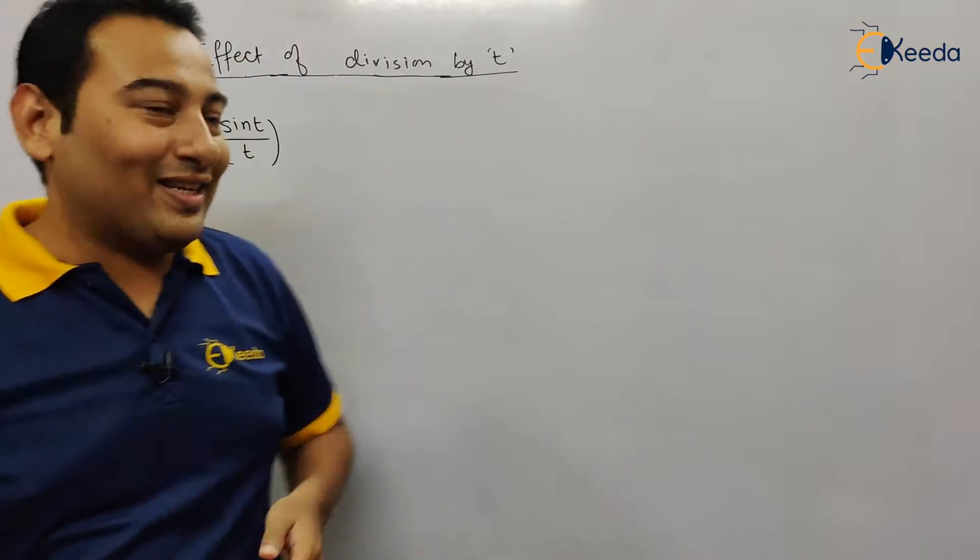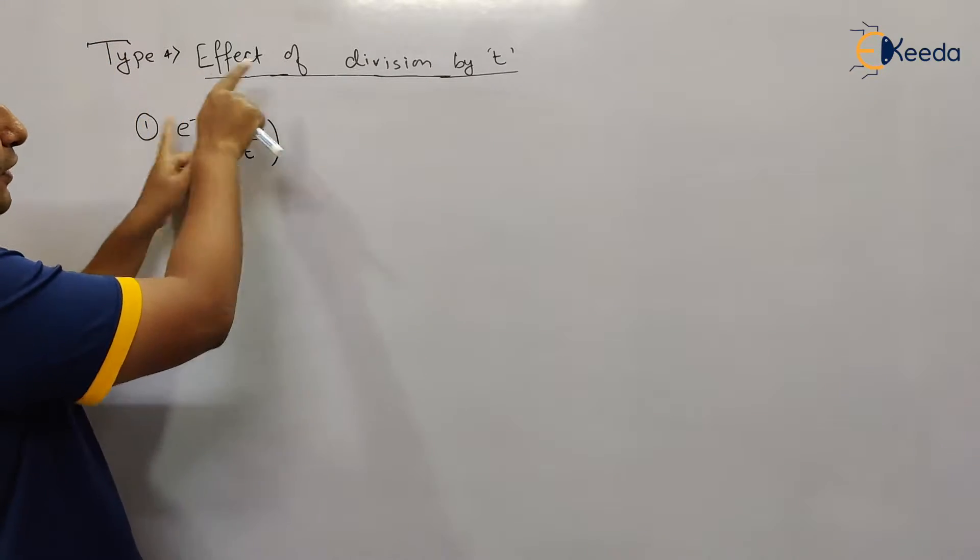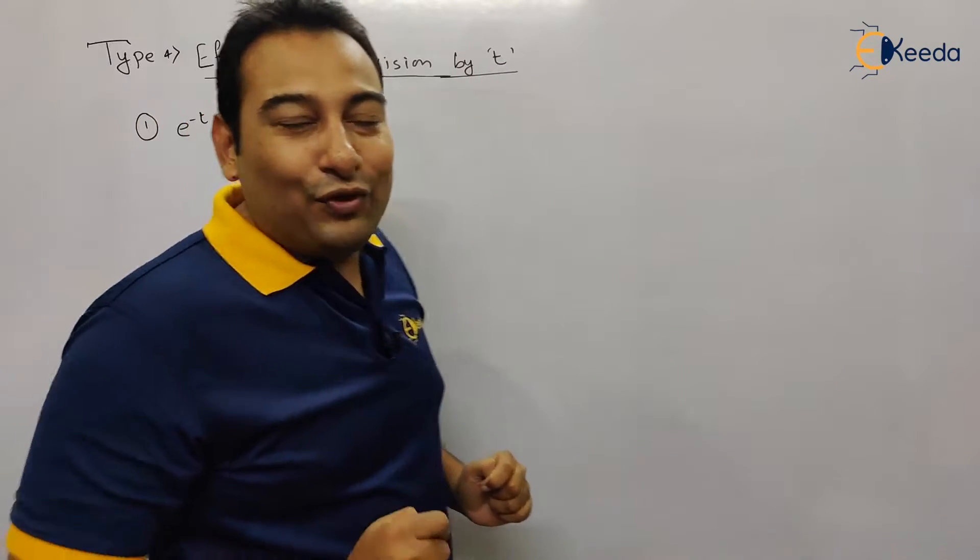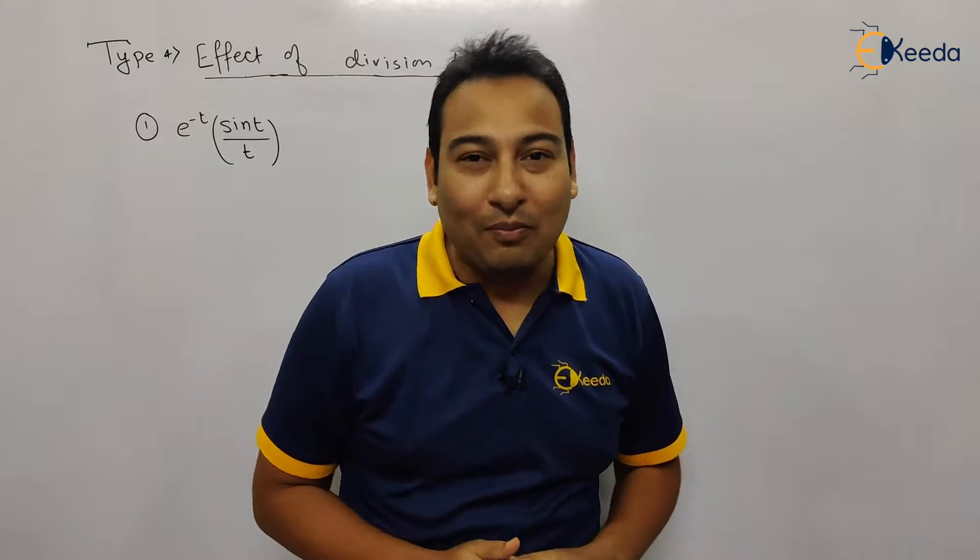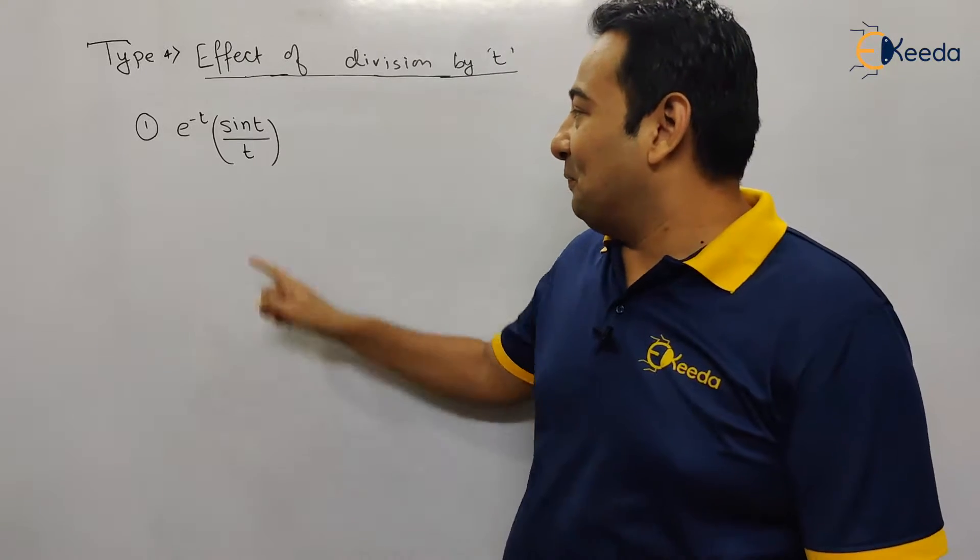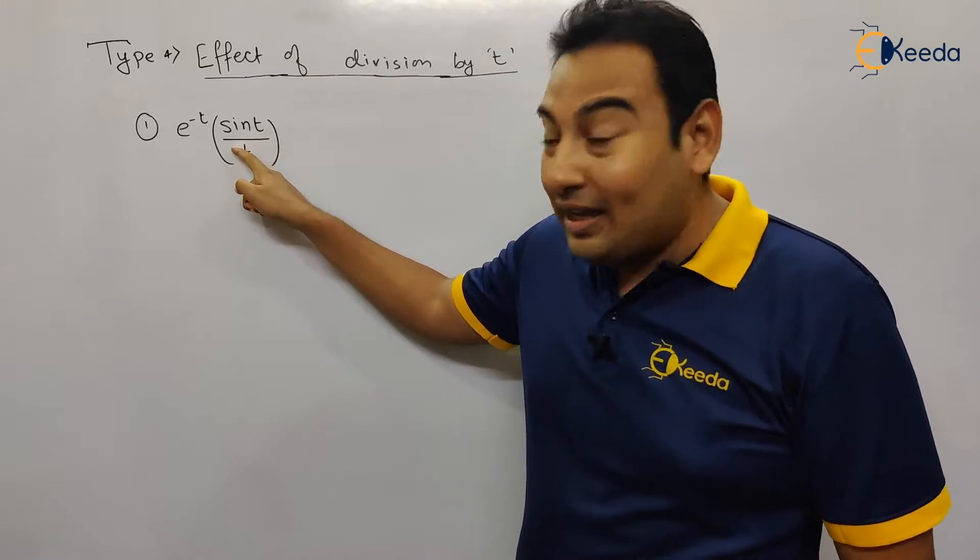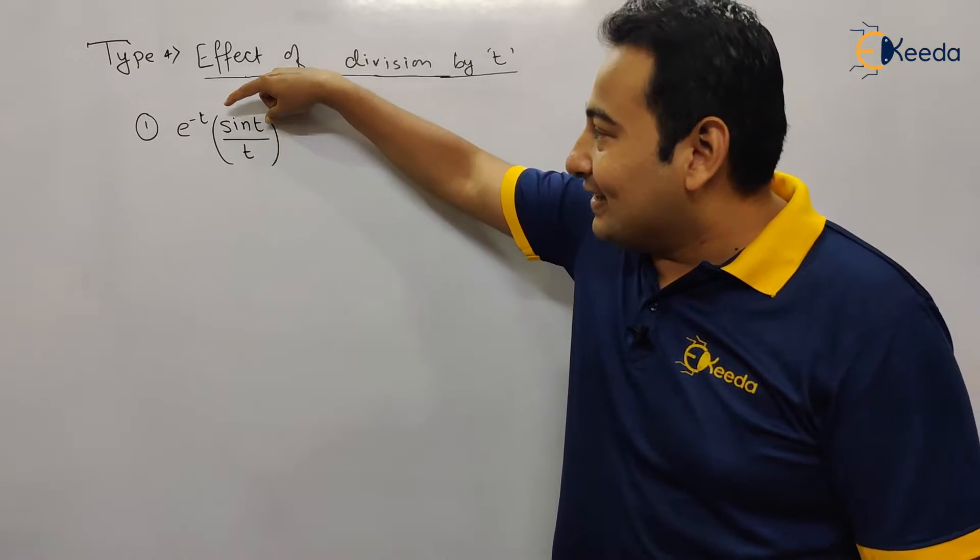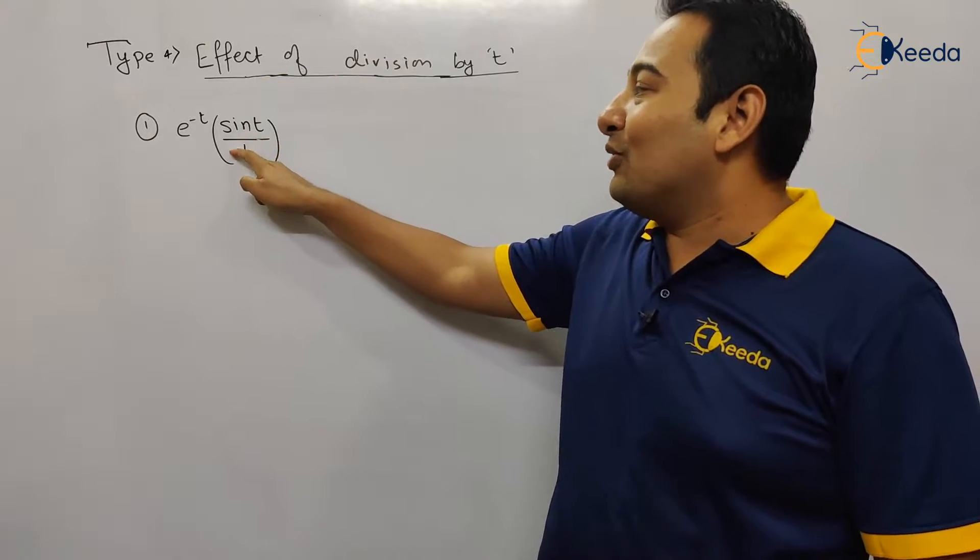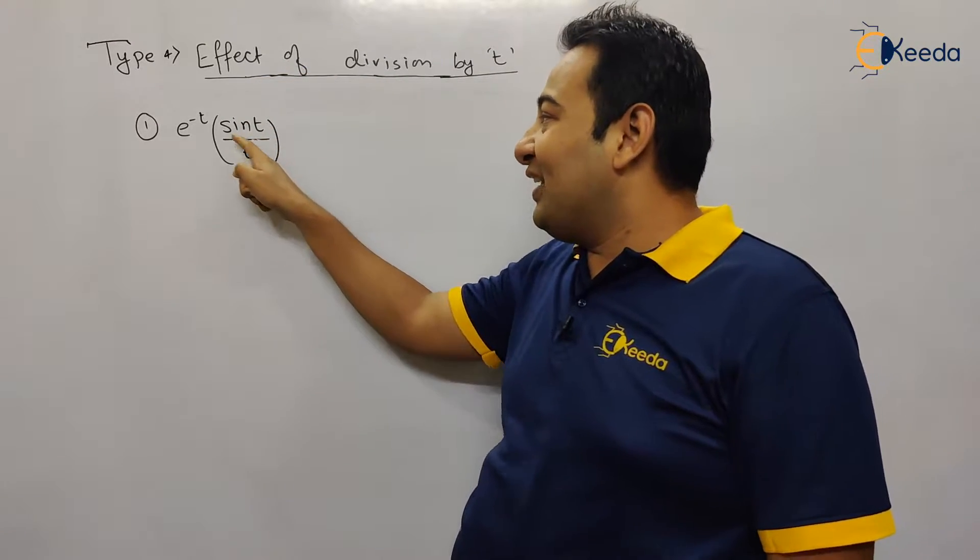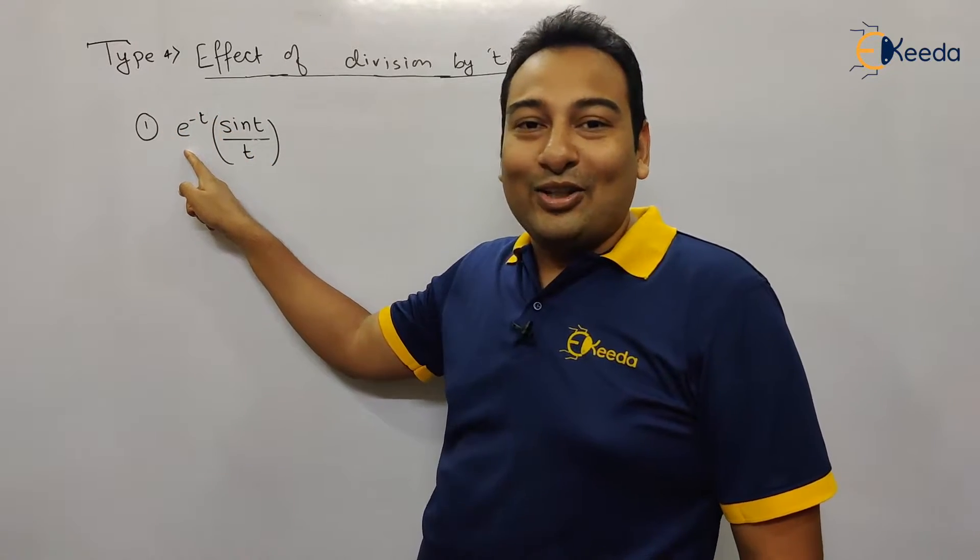So let us start without wasting time. This is the problem in front of you. Please tell me which property do you find in this particular problem. Yes, see here this is what effect of division by t. Sin t is divided by t, so this t is effect of division by t. And what about this property? This property is called FSP.